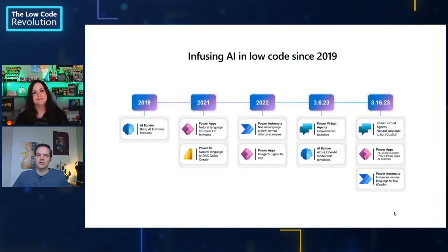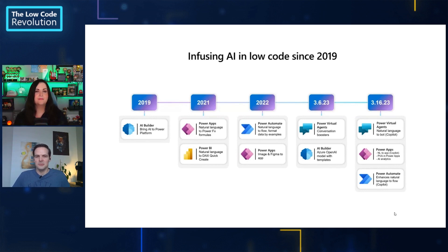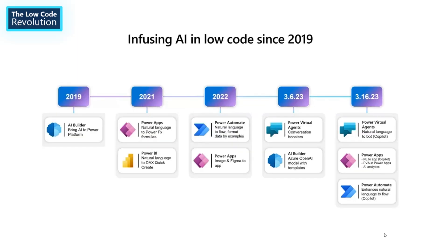Sure. Let me share my screen and show you how we are infusing AI in low-code for the past years in the Microsoft Power Platform. Microsoft Power Platform gives developers all the AI-powered low-code abilities to innovate and accelerate. For example, building Cloud Flows by simply describing them with natural language — this accelerates building automation.